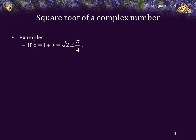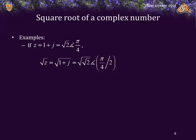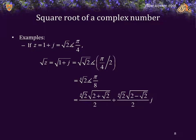As an example, if z is equal to 1 plus j, it's equal to the square root of 2 phase pi over 4. Therefore, the square root of z is the square root of the square root of 2, phase pi over 4 divided by 2. That's equal to the fourth root of 2, phase pi over 8. And, don't worry about the math, but we can actually find that to be this expression here. If we evaluate it, we get that that is approximately equal to 1.0987 plus 0.4551j.